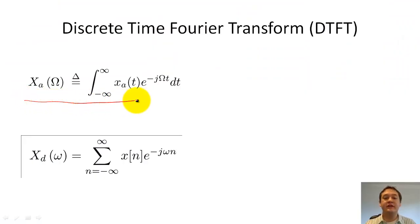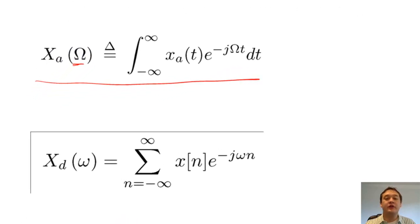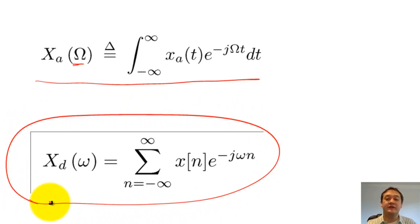Here you can see the Fourier transform, which you should know from analog signal processing. In this course, we use capital omega to represent analog frequencies. Below the Fourier transform, we have the discrete time Fourier transform. You will notice that the DTFT is simply an analogy into discrete time.